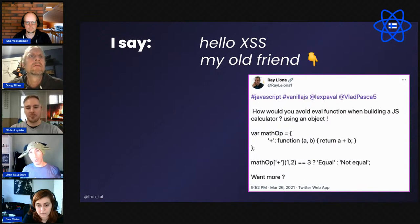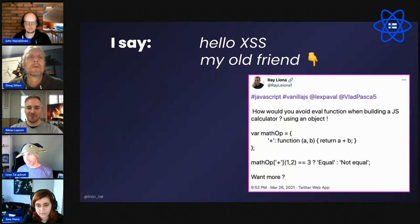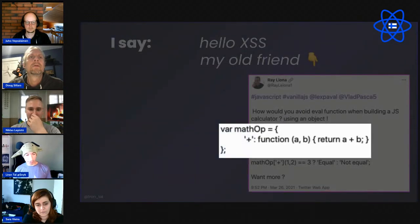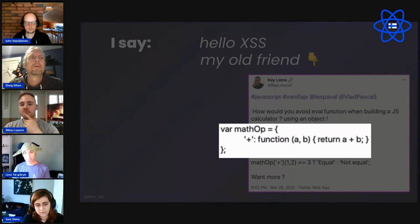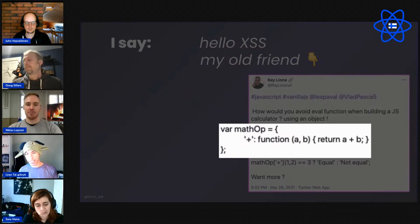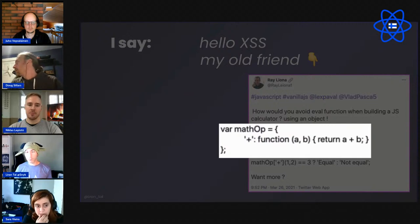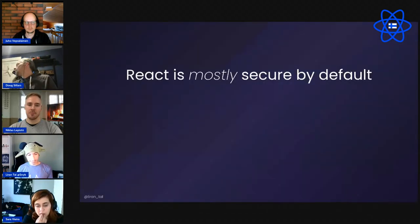Here's a real example from Twitter recently — I changed the username to avoid shaming anyone. This is another common anti-pattern: someone tries to avoid eval but still passes user input — whatever a and b are — directly to that function. It might seem like a good idea, but if a contains an IIFE it will still run with full context. React is mostly secure by default, but that word 'mostly' is what we need to pay attention to.